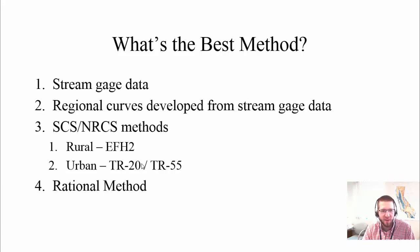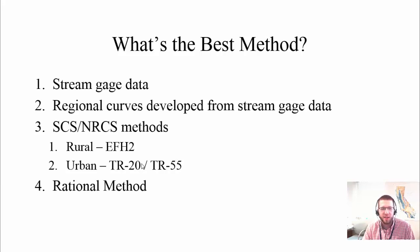It's rare to find a stream gauge near your site unless you're doing a bridge opening or something. The next best option is regional curves developed from stream gauge data. These are really useful except they have the same kind of size limitations as stream gauges. The regional curves are developed from stream gauges, so they're only effective on watersheds down to the smallest stream gauged site in your region of the state. You can't use them on your one-acre watershed leading to your catch basin.